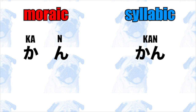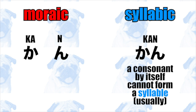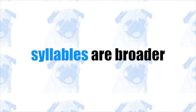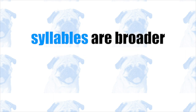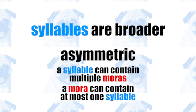How does this difference arise? If you recall from episode 1, a syllable consists minimally of a vowel. This implies that, theoretically, a consonant on its own cannot constitute a syllable, although there are exceptions. So the sound n, being a consonant, cannot stand on its own as a syllable, and it must join the adjacent vowel, namely a. So generally, syllables are broader than moras in scope, and they are in an asymmetric relationship, meaning that a syllable can contain multiple moras, while a mora can contain at most one syllable.